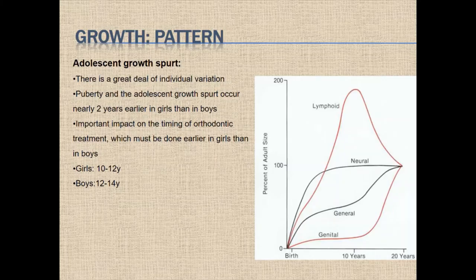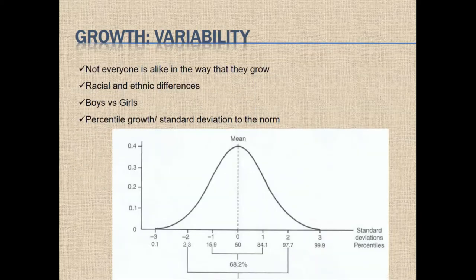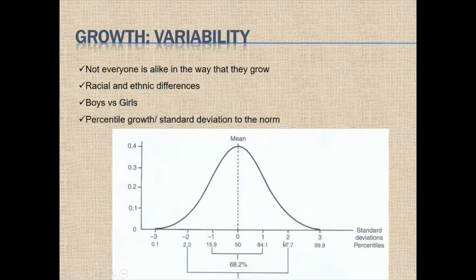Do we know exactly when the adolescence growth spurt occurs? There is an average time: for boys 12 to 14 years of age, for girls 10 to 12, but with lots of individual variation. Boys always have this growth spurt about two years later than girls. With one standard deviation, we represent about 68% of the population, and two standard deviations represent about 95 to 97% of the population. This is what we call growth variability.